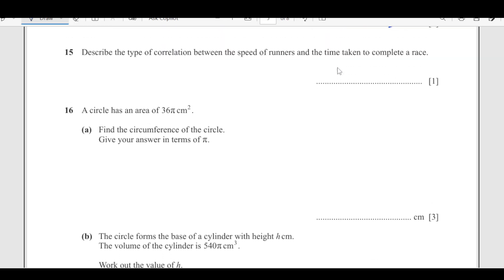Number 15, describe the type of correlation between the speed of runner and the time taken to complete the race. If the speed is more, then time taken will be less, so this is a negative correlation. The type of correlation is negative.